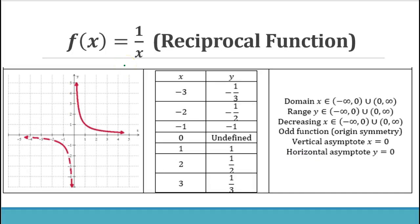Now let's look at the rational function f(x) equals 1 over x, also called the reciprocal function. Here's its graph, obtained by plugging in x values. For x equals negative 3, negative 2, and negative 1, we get negative one-third, negative one-half, and negative 1. When we substitute 0, the denominator equals 0, which is undefined — so we cannot have any values along the line x equals 0, which is the y-axis.